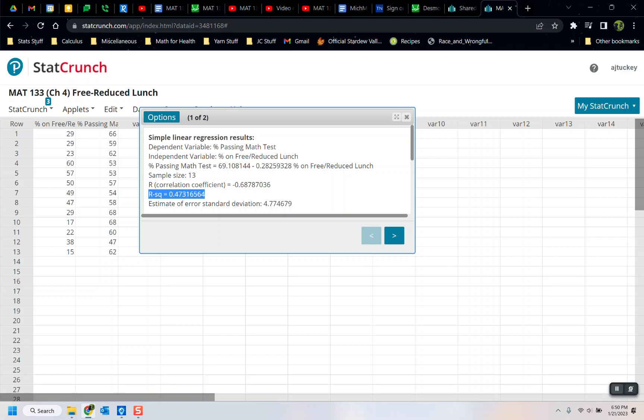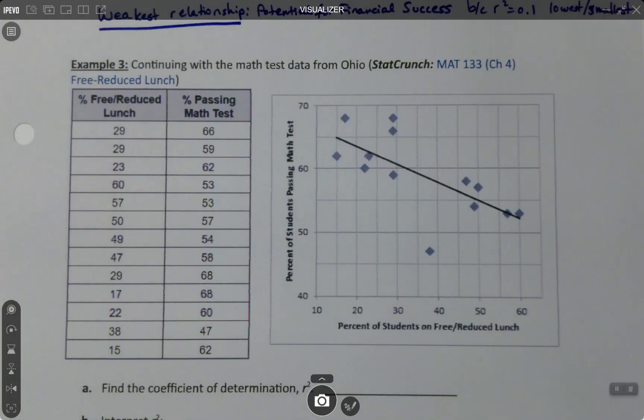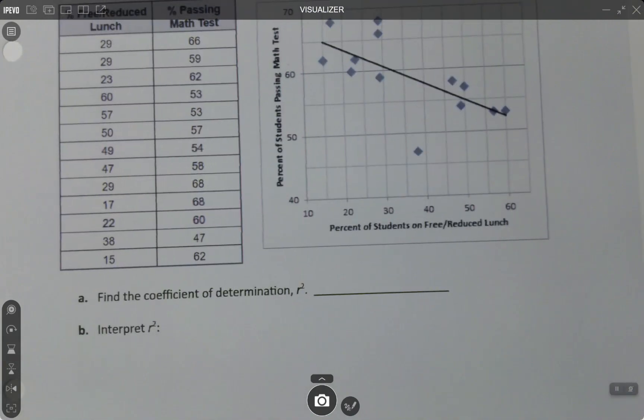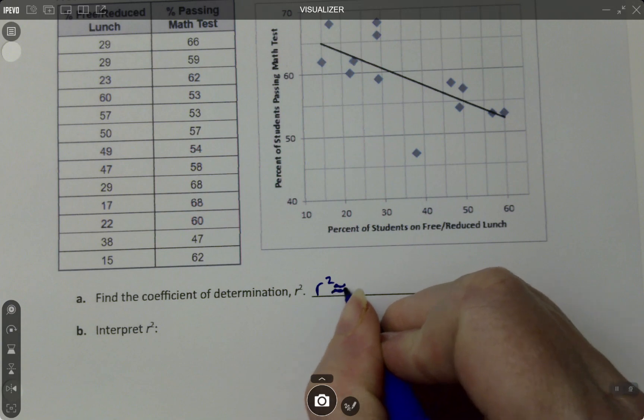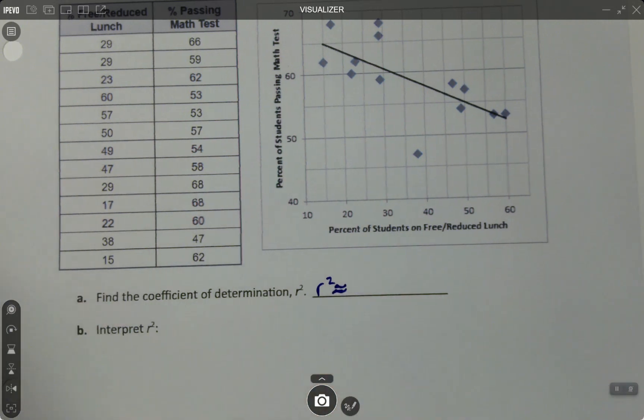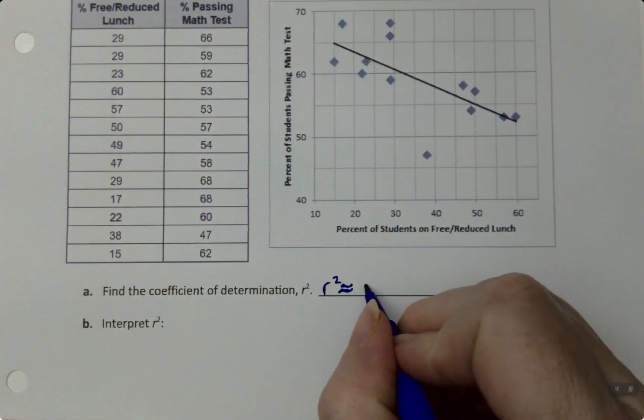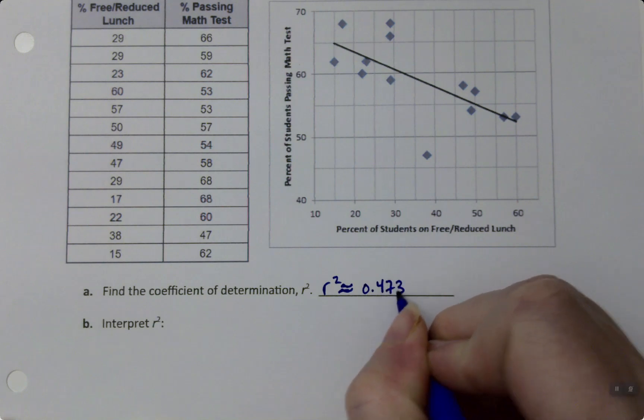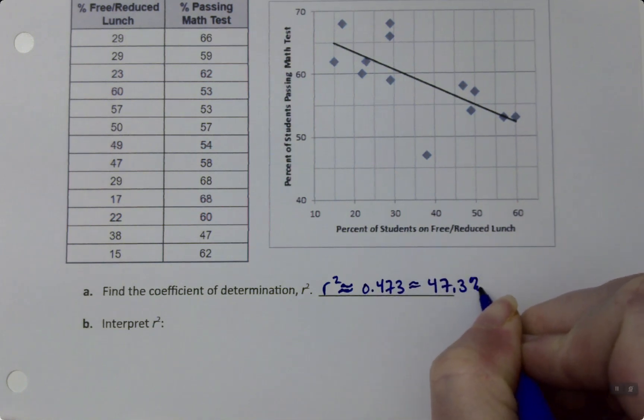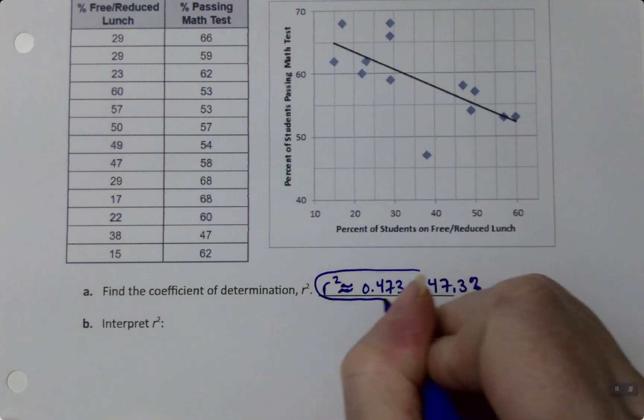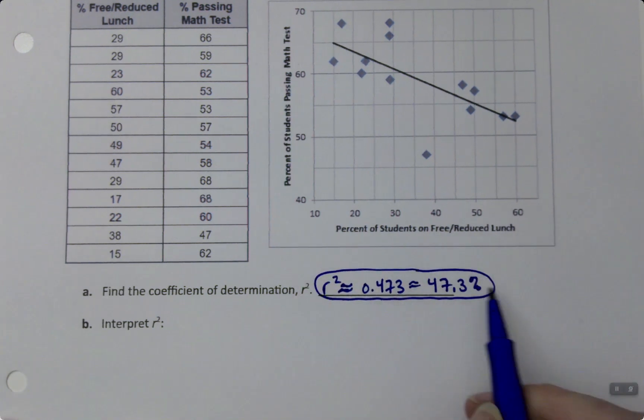So that is the R-squared value, the coefficient of determination. The coefficient of determination, R-squared, is approximately 0.473, or if you will, 47.3%.